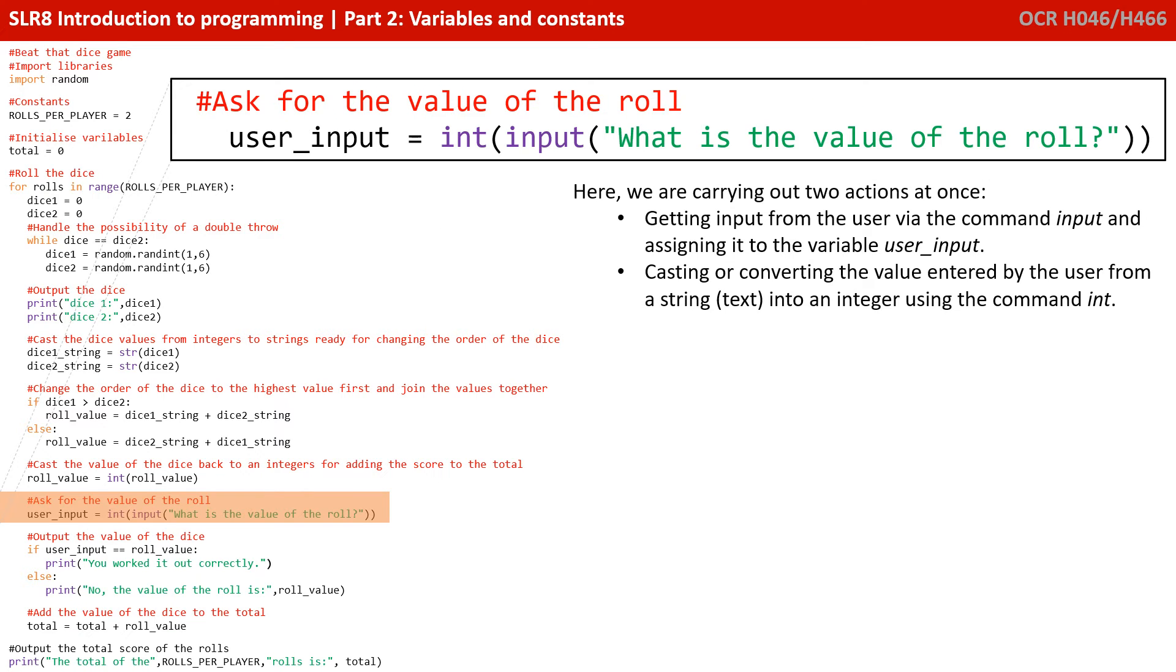Here we're carrying out two actions at once. The first is getting input from the user via the command input, and this is how we typically get input from, say, the keyboard, and we're assigning it to the variable user input. But at the same time, we're also casting or converting the value entered by the user from a string into a number. And that's performed by the command int.